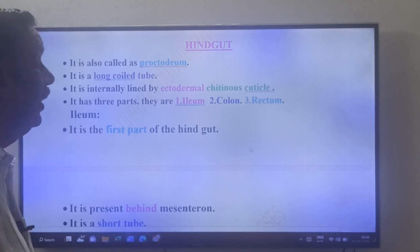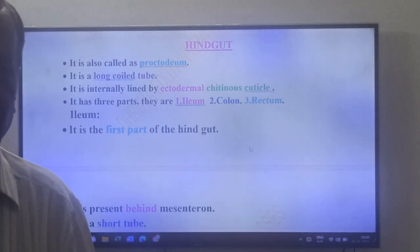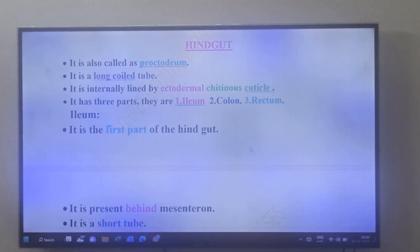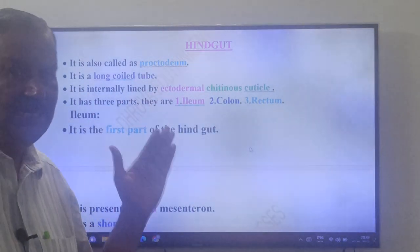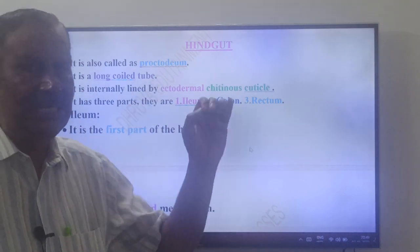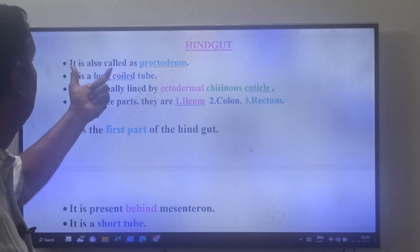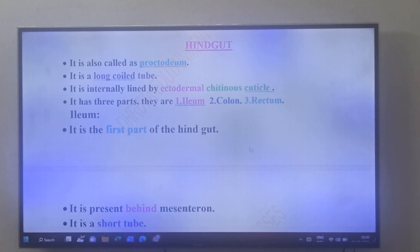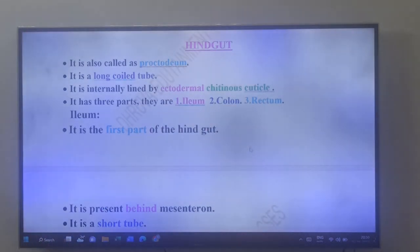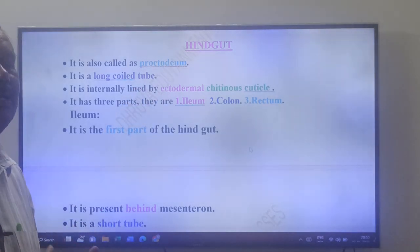The hindgut is also called proctodeum. It is the last part of the alimentary canal of cockroach. The foregut is called stomodium, the midgut is called mesenteron or ventriculus, and the hindgut is called proctodeum. It is a long coiled tube internally lined by ectodermal chitinous cuticle.